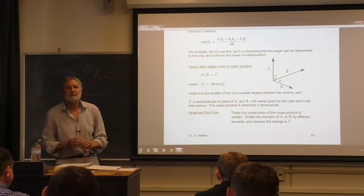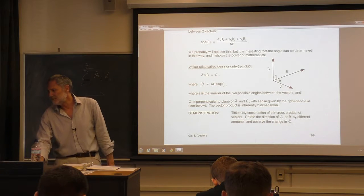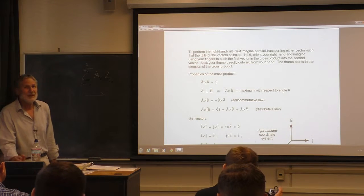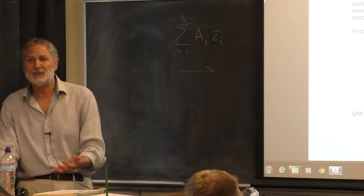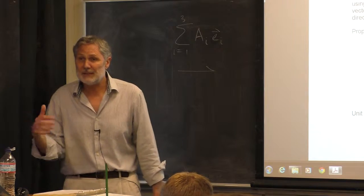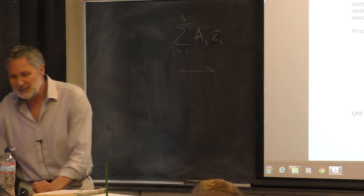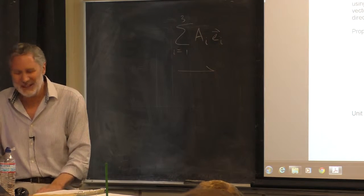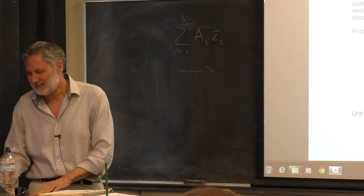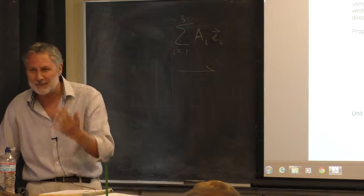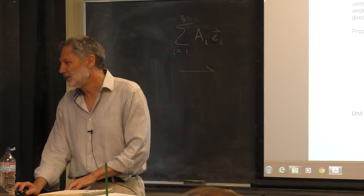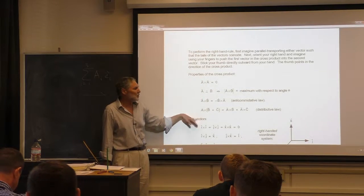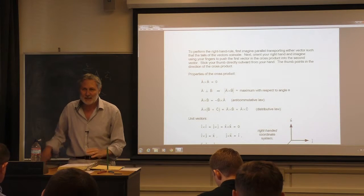Note that the cross product is not commutative — A cross B gives the opposite direction from B cross A. A physics textbook in the 80s tried using the left-hand rule for electrons (since they have negative charge), but this caused so much confusion that the approach was quickly abandoned. We'll continue with properties of the cross product next class, and then move into kinematics in higher dimensions.